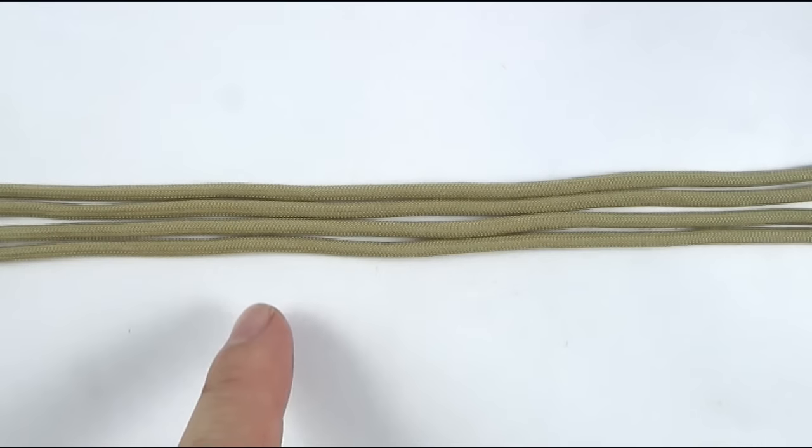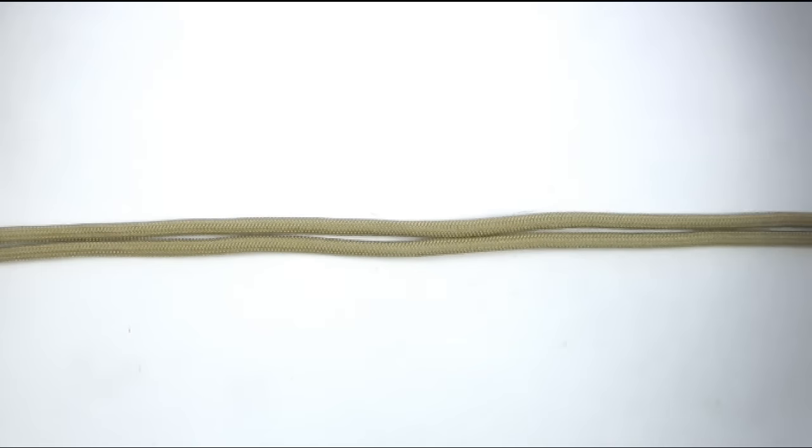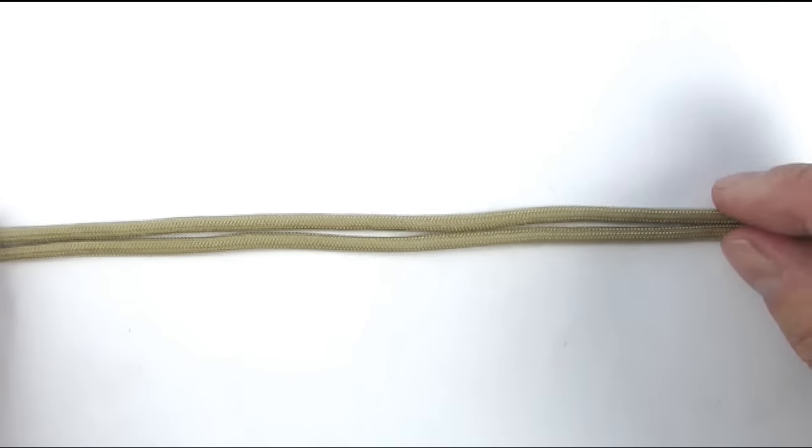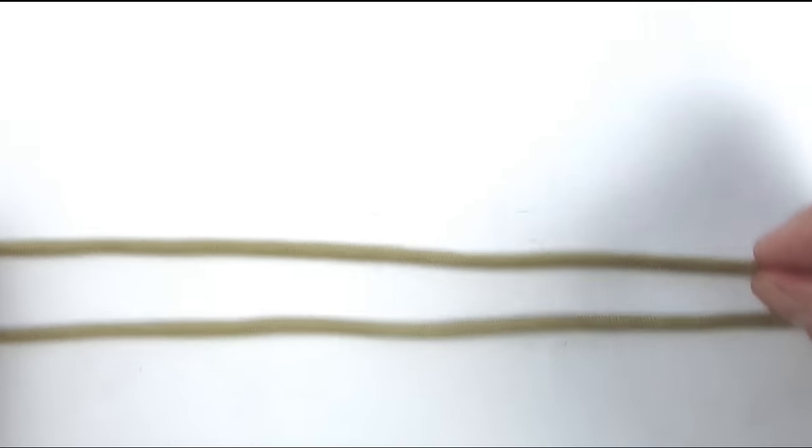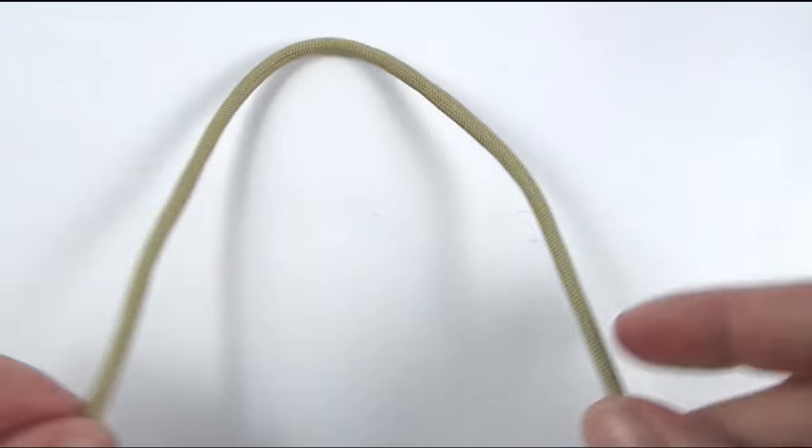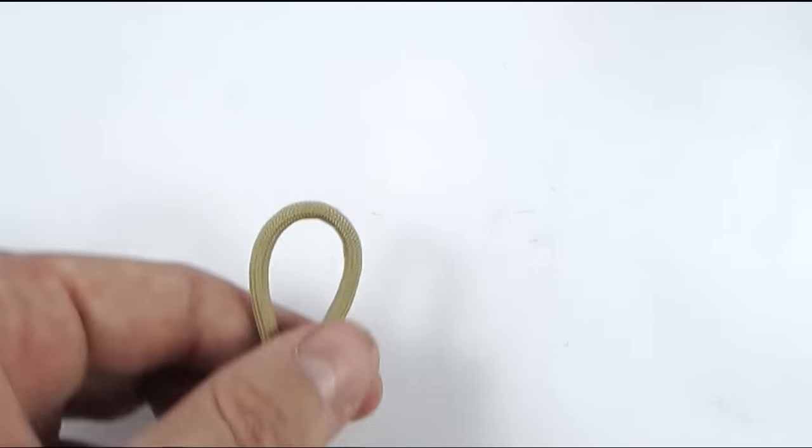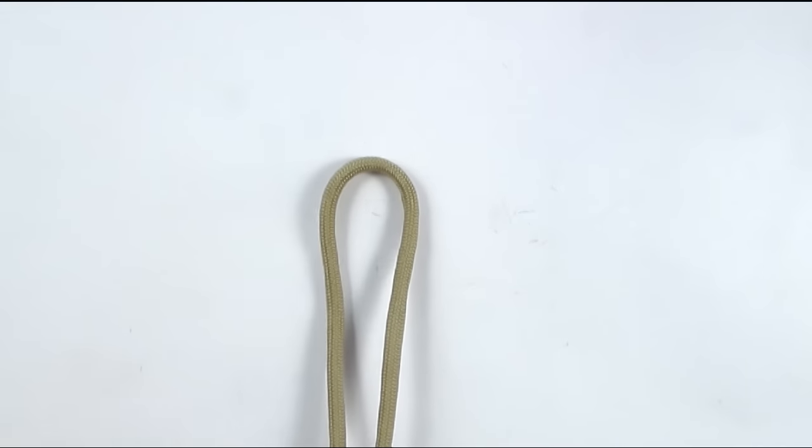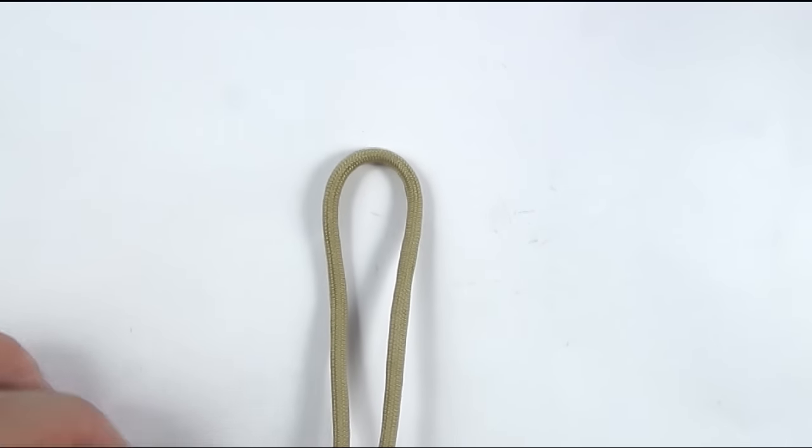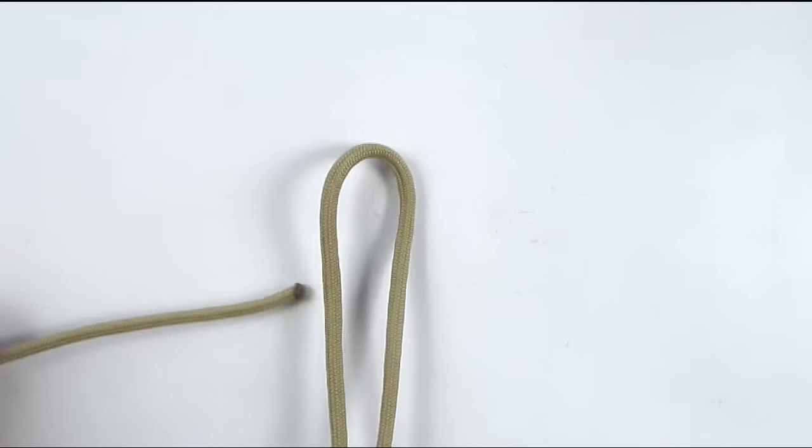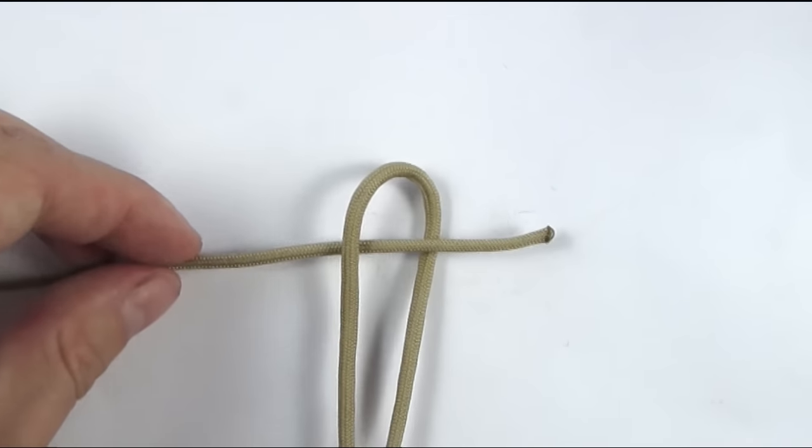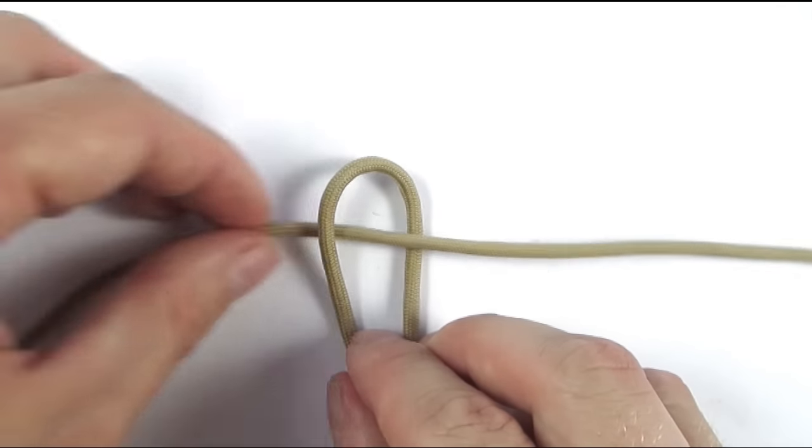So we have our four cords here, each about a foot and a half long and we're going to start by using two of them to make the top part of our cross. And we start by folding one of our cords in half, then taking the other cord and going under the left and over the right, like this.